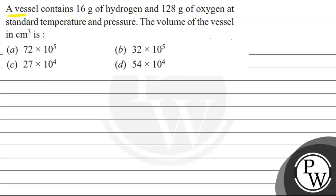Let us read this question. The question says that a vessel contains 16 grams of hydrogen and 128 grams of oxygen at standard temperature and pressure.